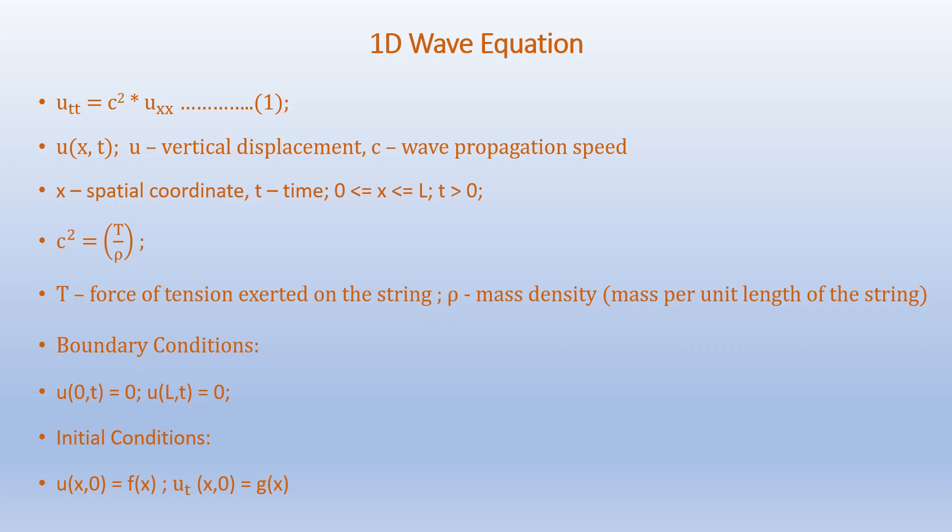The boundary conditions are given as U at (0, T) equals 0 and U at (L, T) equals 0, as the displacement is zero at either end. The initial conditions are given as U at (X, 0) equals F of X, and Ut at (X, 0), which equals dU/dT at (X, 0), equals G of X.